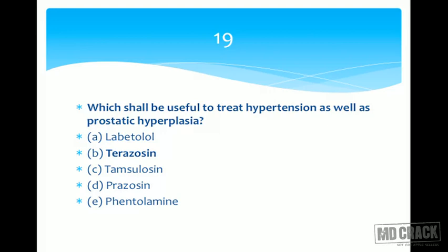Final question: thiopentone has a short duration of action due to — A) rapid destruction, B) slow brain entry, C) rapid elimination from the body, D) rapid redistribution, E) renal breakdown. Rather than analyzing each confusing option, ask yourself: what is thiopentone? It is an ultra-short acting barbiturate, an intravenous anesthetic used for induction of anesthesia — not for long surgeries.